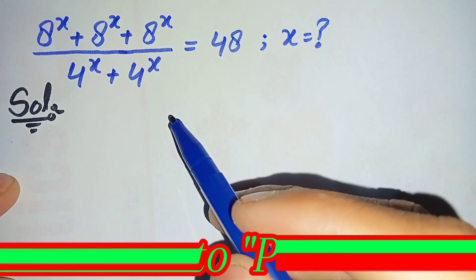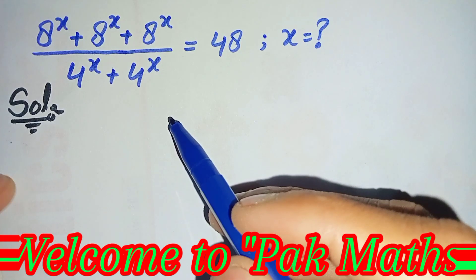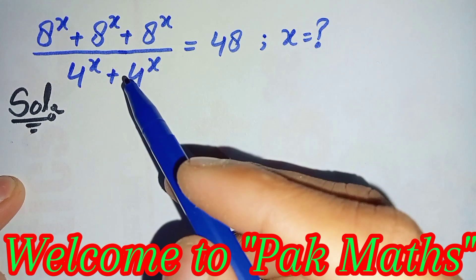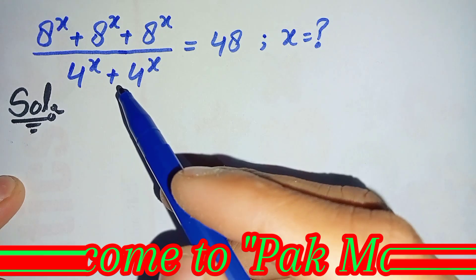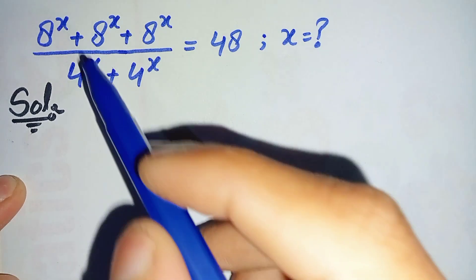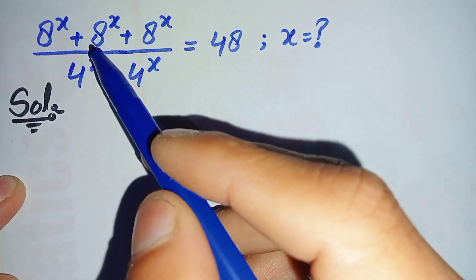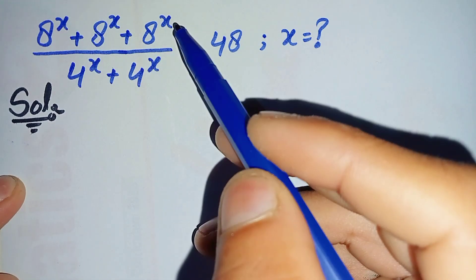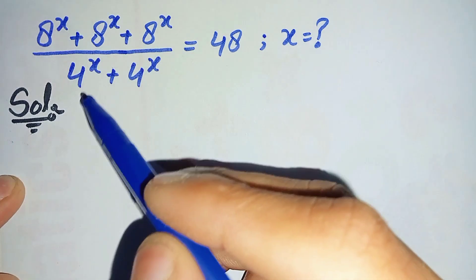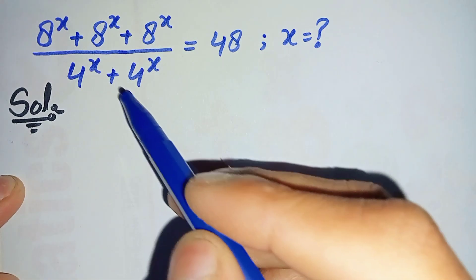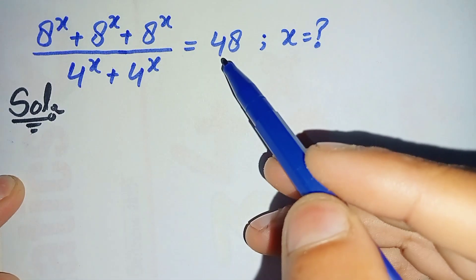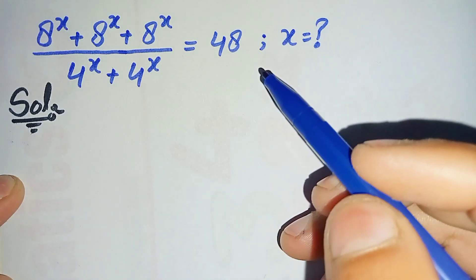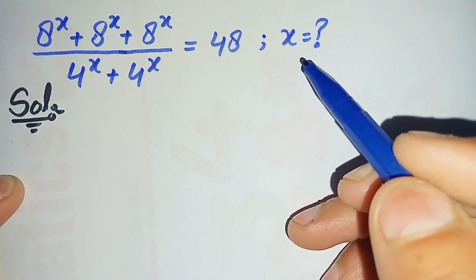Hello everyone, welcome to ParkMaths. In this video I am going to solve this interesting exponential math problem: 8 raised to power x plus 8 raised to power x plus 8 raised to power x, divided by 4^x plus 4^x, is equal to 48. So here we will try to find the value of x.